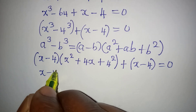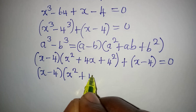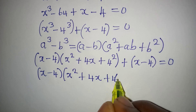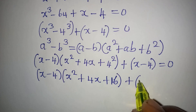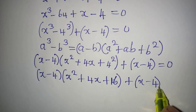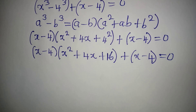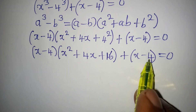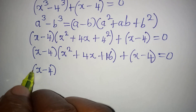Closing this, I have this plus open bracket x minus 4, equal to 0. So we have x minus 4 into x squared plus 4x plus 16 — since 4 squared is 16 — then plus open bracket x minus 4 equal to 0. Now we have something common, and that is x minus 4, so we're going to factor out x minus 4.